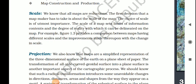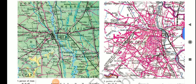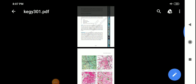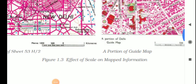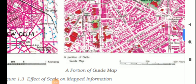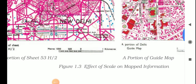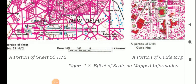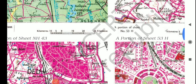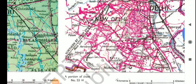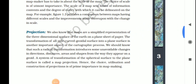Scale sets the limits of information and the degree of reality with which it can be shown on the map. For example, as shown in Figure 1.3, you can see the map of Delhi drawn in different ways, with scale used in all the maps — meters and kilometers — showing the same portion of Delhi at different map scales.